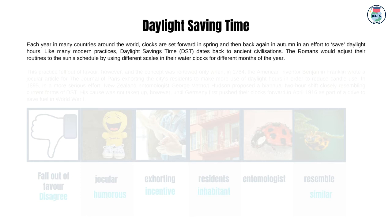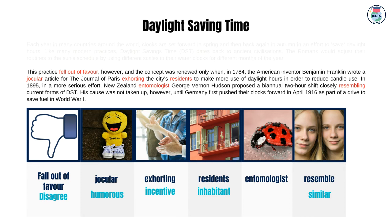Each year in many countries around the world, clocks are set forward in spring and then back again in autumn in an effort to save daylight hours. Like many modern practices, daylight savings time (DST) dates back to ancient civilizations. The Romans would adjust their routines to the sun's schedule by using different scales in their water clocks for different months of the year. This practice fell out of favor, however, and the concept was renewed only when, in 1784, the American inventor Benjamin Franklin wrote a jocular article for the Journal of Paris exhorting the city's residents to make more use of daylight hours in order to reduce candle use. In 1895, in a more serious effort, New Zealand entomologist George Vernon Hudson proposed a biannual two-hour shift closely resembling current forms of DST. His cause was not taken up, however, until Germany first pushed their clocks forward in April 1916 as part of a drive to save fuel in World War I.